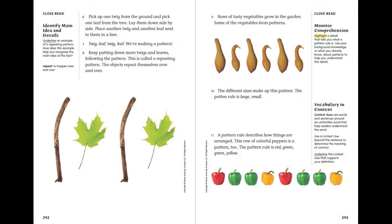Rows of tasty vegetables grow in the garden. Some of the vegetables form patterns. The different sizes make up this pattern — the pattern rule is large, small. A pattern rule describes how things are arranged. This row of colorful peppers is a pattern too.